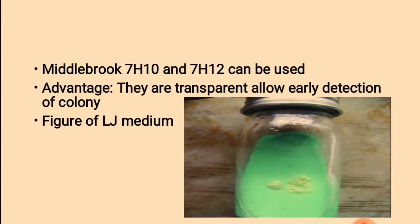Middlebrook 7H10 and 7H12 can also be used. Their advantage is that they are transparent and allow early detection of colonies. Here is a figure of Lowenstein-Jensen medium.